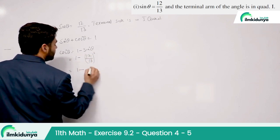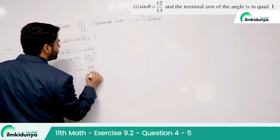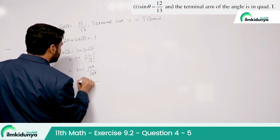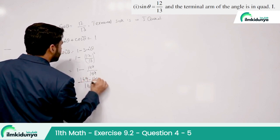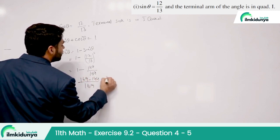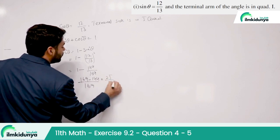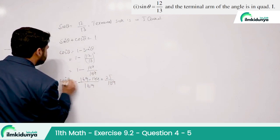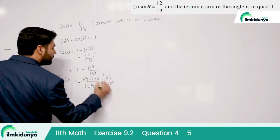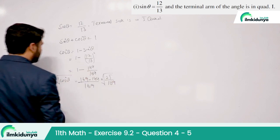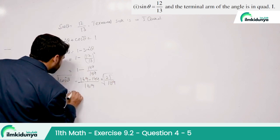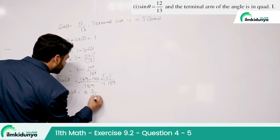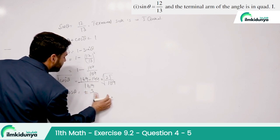So, 1 − 144/169 = 25/169. Now here we have cos²θ. Applying square root, cos θ = ±5/13.